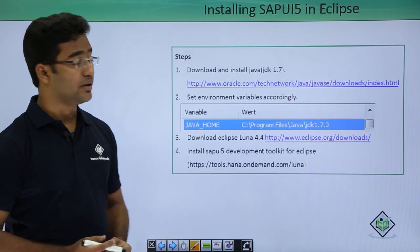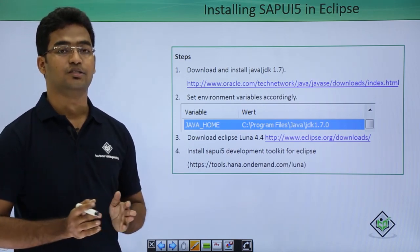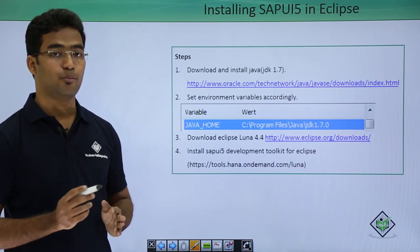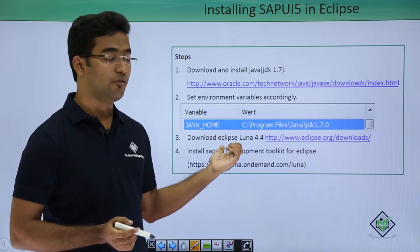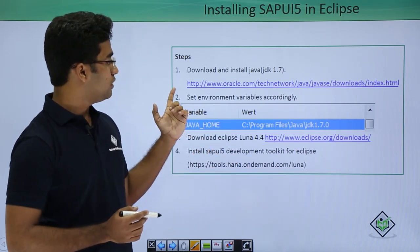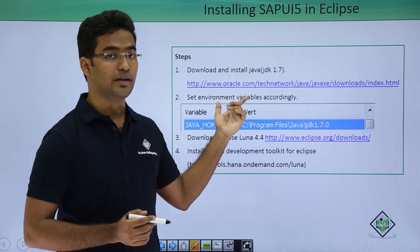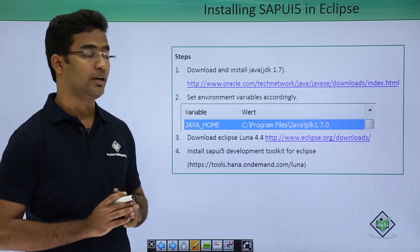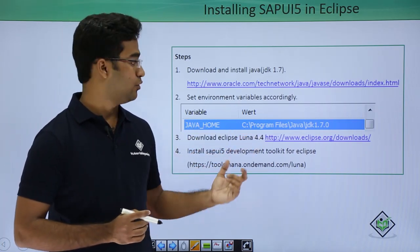Now let us look at installing SAPUI5 in Eclipse. The first step is to download and install JDK 1.7. We are using JDK 1.7 because we are using Eclipse Luna 4.4, which only supports JDK 1.7. You can download JDK 1.7 from the Oracle link, and once installed you need to set the environment variables for Java home.